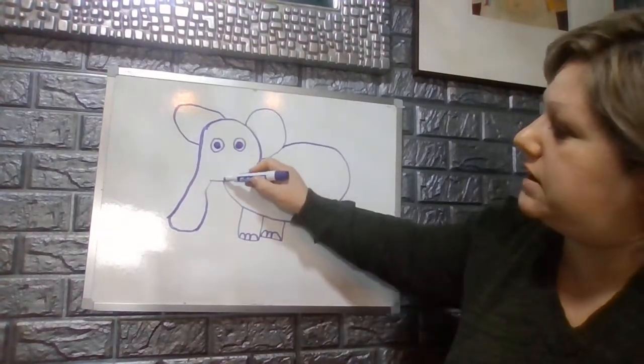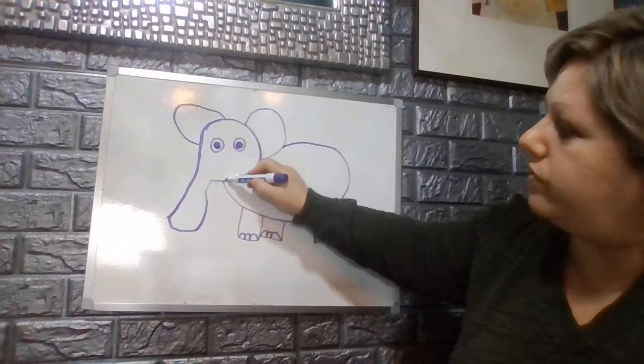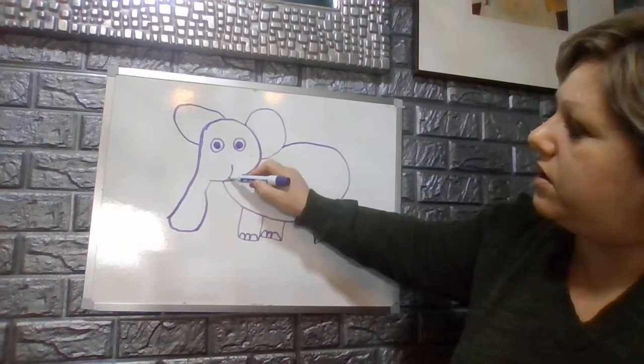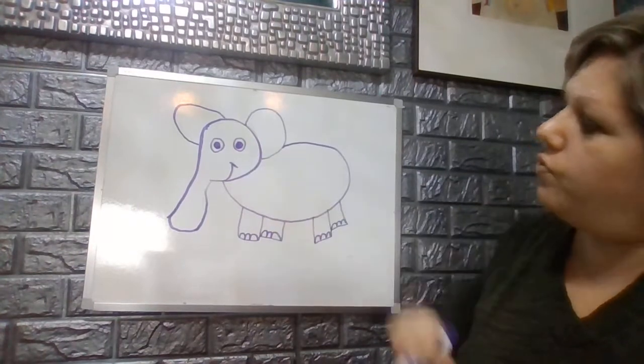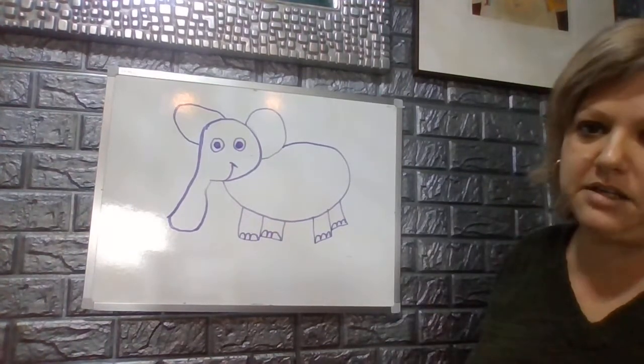Then we're going to extend by putting a curved line right here for his mouth and we're going to tap it off with a straight diagonal line.